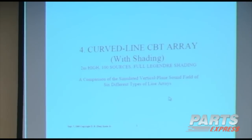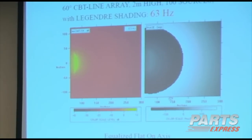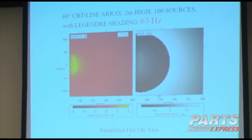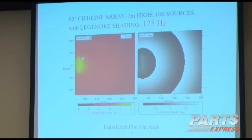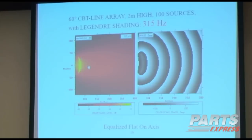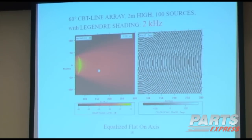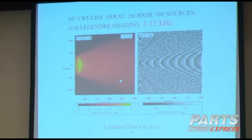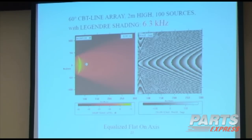Now this is a curved line CBT array. This happens to be a 60-degree CBT array which provides about a 45-degree beam width. You can see the shading over here — it's a curved arc, yellow, and it's shaded — louder here than on the ends. As you go up in frequency, it attains this beam width starting at about 500 to 600 hertz. Look what happens as I go up in frequency — it's just perfectly uniform. It doesn't have any near-field interference near the array.